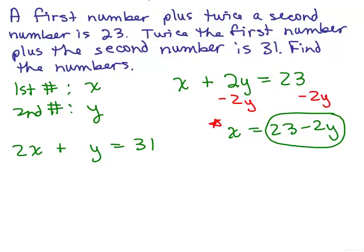I need to put that in for x into the 2x plus y equals 31. So we have 2 times 23 minus 2y plus y equals 31. Now we have an equation with only one variable.